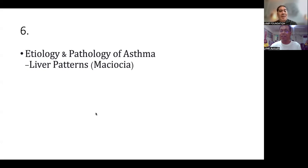Now, let's go to the liver patterns for asthma according to Maciocia. Okay. Now, if there is a liver chi stagnation, since liver makes sure that the smooth flow of chi, and if the liver stagnated or the chi of the liver stagnated, it will also hamper the downbearing function and dispersing of the lungs. Okay.